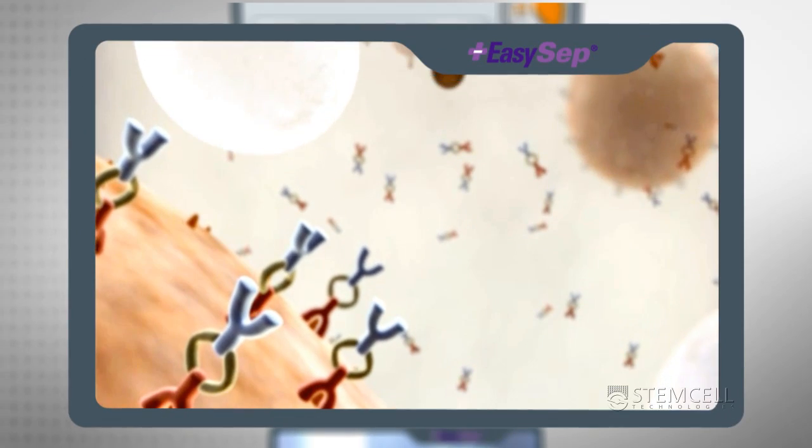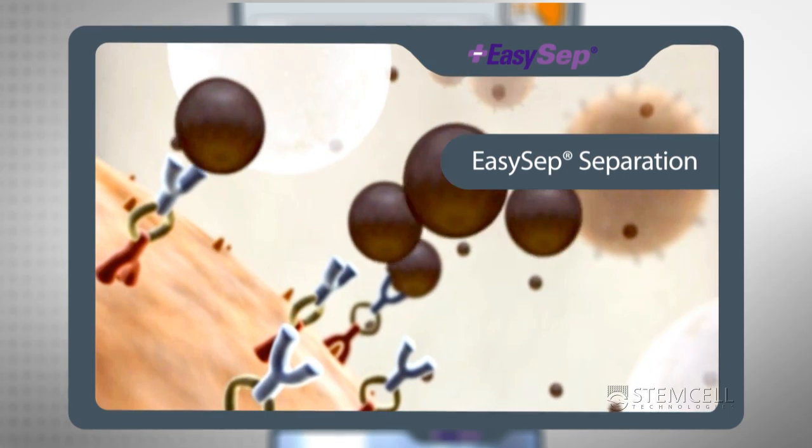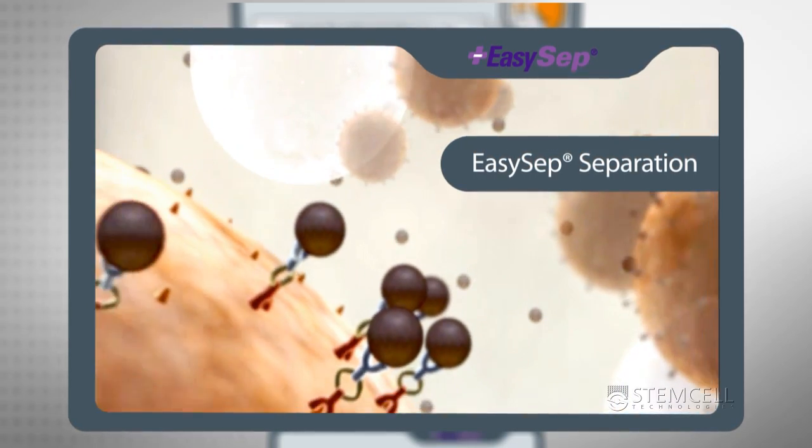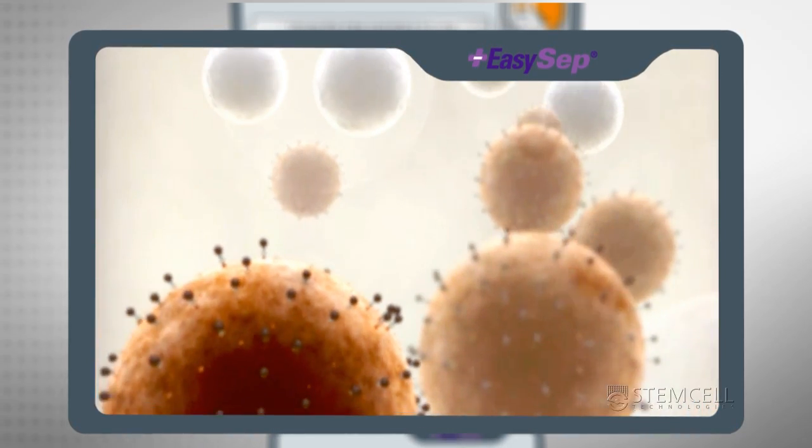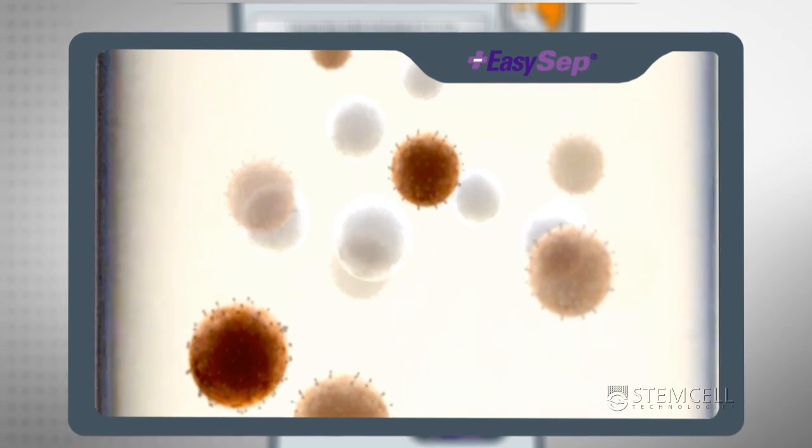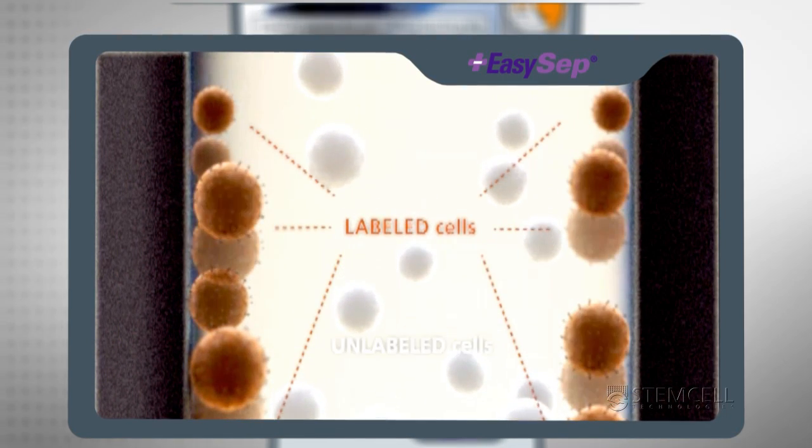During the incubations, antibodies in the EZ-Set Enrichment Cocktail cross-link first to the unwanted cells and then to the magnetic particles. The unwanted cells are then attracted to the walls of the tube by the powerful EZ50 EZ-Set Magnet.